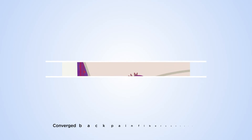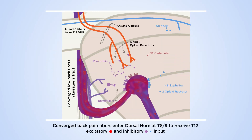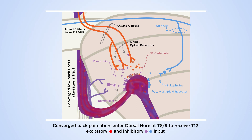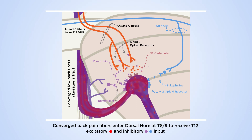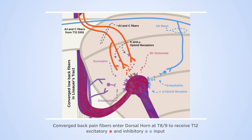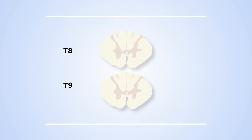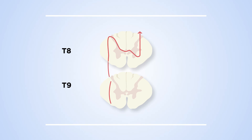At the T8 and T9 level, the converged deep lumbar spine pain fibers receive the final piece of sensory information from the low back, which is from the skin and soft tissue from the T12 spinal nerve. With the full sensory information, the nerve fibers make their way up towards the brain.